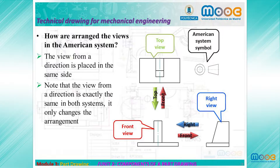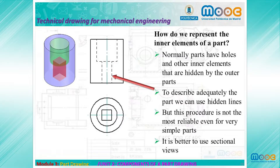How are Views arranged in the American System? The View from a direction is placed on the same side — the opposite to the European System. Note that the view from a direction is exactly the same in both systems; we are looking at the same part from the same direction. Only the arrangement changes, and normally this does not produce great problems.